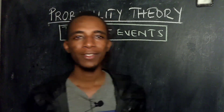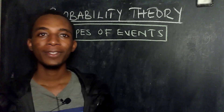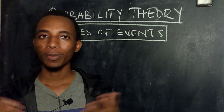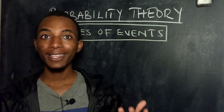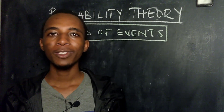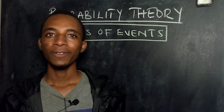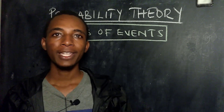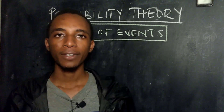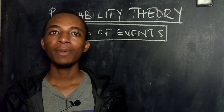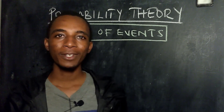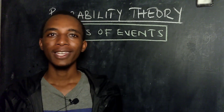Hi there. So this is the second video in this series of probability theory, and in this video I'm going to be talking about types of events. In the previous video we defined what probability is and we also defined an event, which is the outcome of a random experiment or a set of outcomes. If you toss a coin, you could have getting a head or getting a tail as an event. If you roll a dice, you could have getting an even number as your event. It's important to talk about these types of events because everything we deal with in probability is in some sense an event.